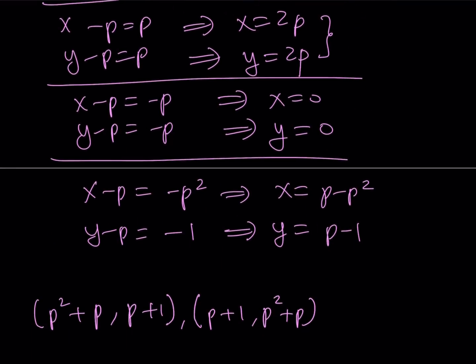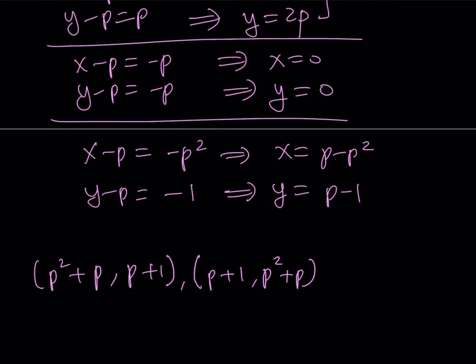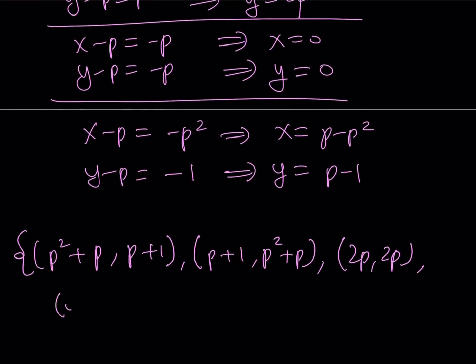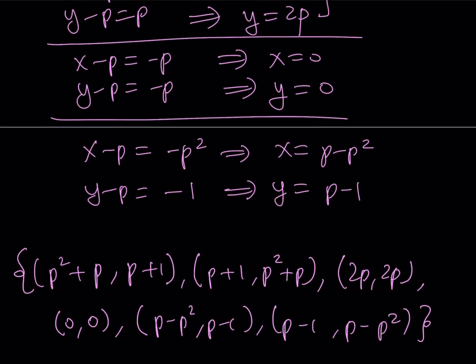My second ordered pair is going to be 2P and 2P, but they don't switch around because it's going to be the same thing. So I got 2P, 2P, and this is going to be my solution set. And now we got the 0, 0. Again, they're not going to switch around, so it's just 0, 0. And then we got the last one, which is P minus P squared with P minus 1, or P minus 1 with P minus P squared. And those are going to be all the solutions to this equation.